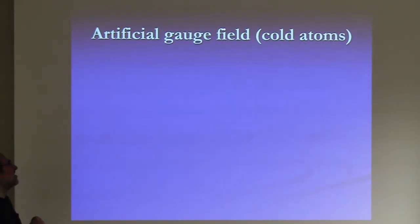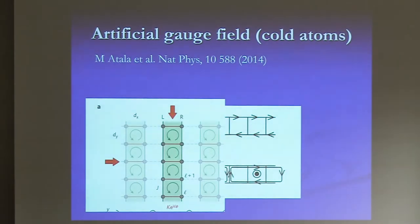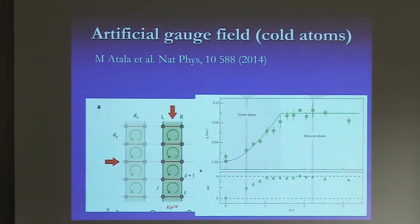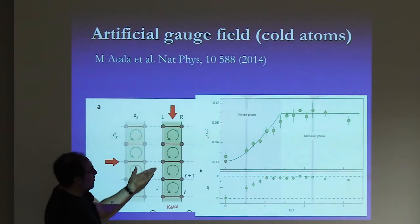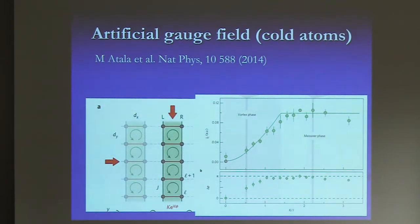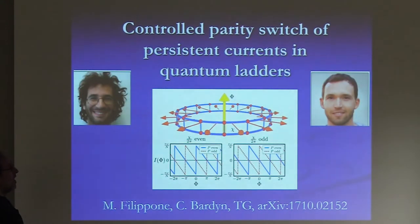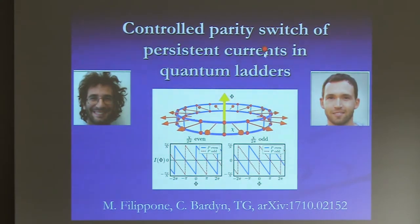Fortunately this was tested in cold atoms. There were experiments in Immanuel Bloch's group about four years ago where they realized ladders with artificial gauge fields and very clearly saw the two phases: the Meissner phase and the vortex phase. So cold atoms are clearly bringing the possibility to study these ladders. I finally arrived to the place I thought I would not reach in the talk — if you want to know more about ladders under a magnetic field, go discuss with Michele Filippone and see his poster. We have recent work on this which has been put on arXiv.